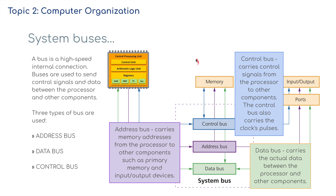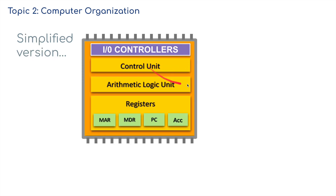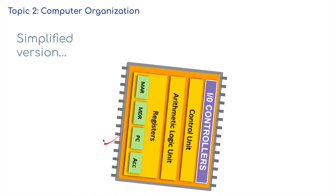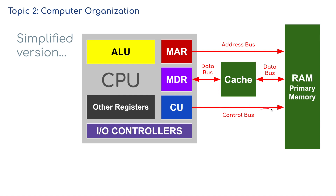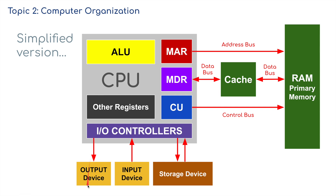I just want to simplify this down a little further. If we take the original schematic of the CPU and change it to just a simple block diagram, we can see the MAR, MDR, the control unit, the arithmetic and logic unit, other registers, and the I/O controllers. We can add in the cache, the different buses, and the primary memory RAM, and then we can also see the output devices, the input devices, and the storage.